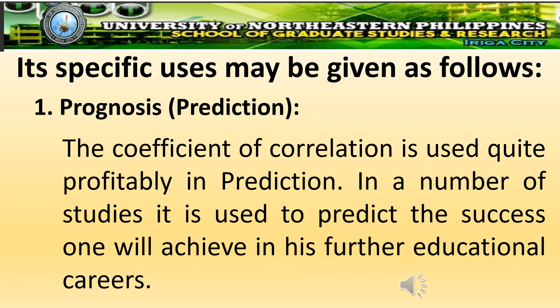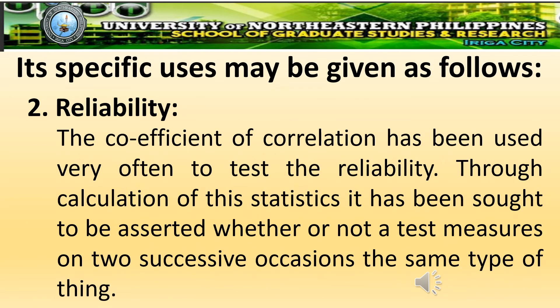First, prognosis or prediction. The coefficient of correlation is used quite profitably in prediction. In a number of studies, it is used to predict the success one will achieve in further educational careers. Second, reliability. The coefficient of correlation has been used very often to test the reliability. Through calculation of these statistics, it has been sought to be asserted whether or not a test measures on two successive occasions the same type of thing.